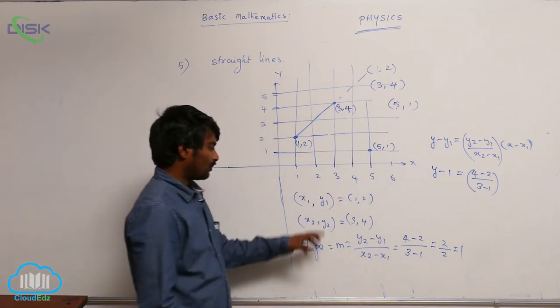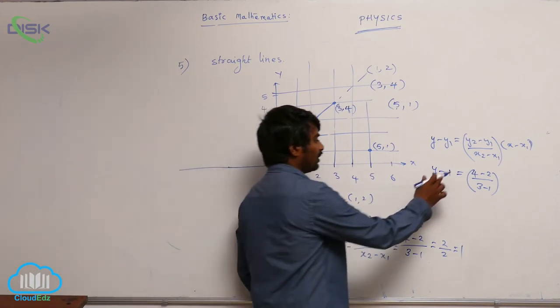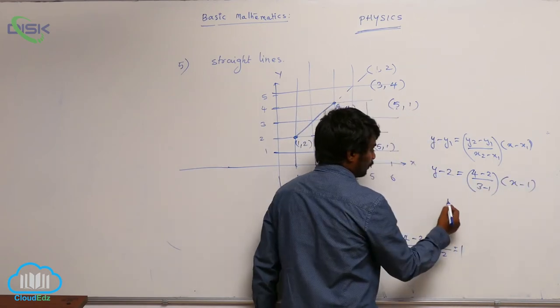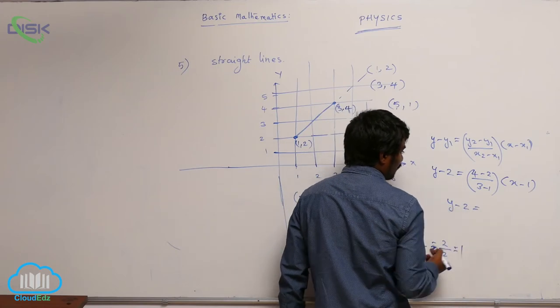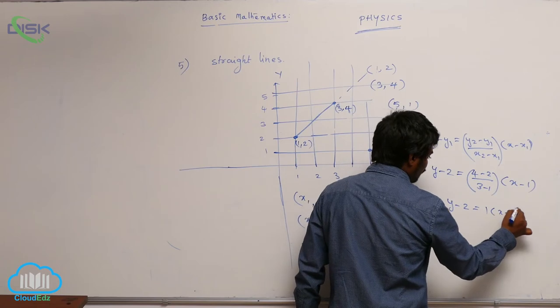Sorry, here y1 is 2, x1 is 1. So what you are going to get? y minus 2 is equal to 2 by 2, that is equal to 1, into (x minus 1).